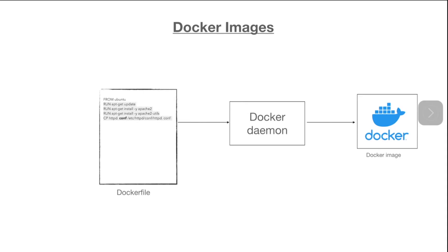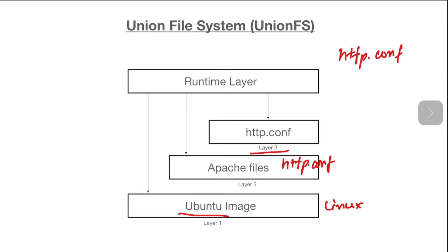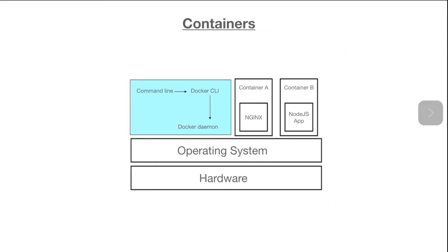Suppose we want to create a Docker image of an Apache file server. We will take a base image of a Linux operating system — let's take Ubuntu. We will update the OS, and on top of that install the Apache file server. And if we want to make config file changes, we will copy the httpd.conf file from our host machine. This can be seen as stacked layers together, and we call it the Union File System. The Union File System does the union of all the files, giving reference to the topmost layer for particular content. So if we want to get the content of the httpd.conf file, that file will be extracted from layer 3, even though the file may also exist on layer 2 — the Union File System will give reference to the topmost layer. The image can be seen as a stack of these layers.